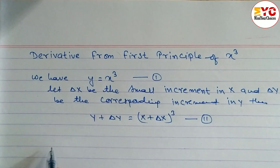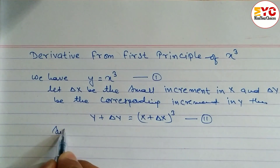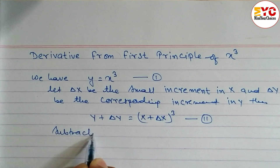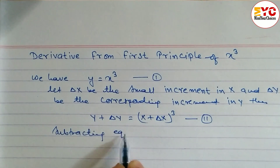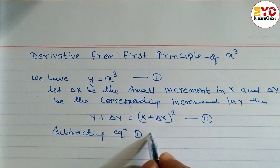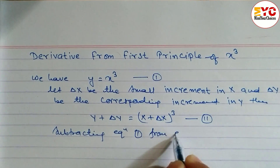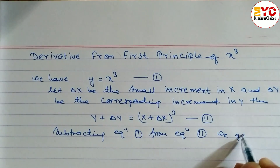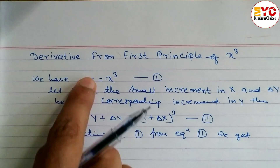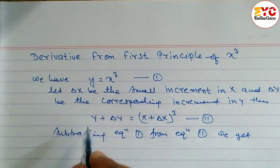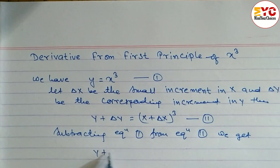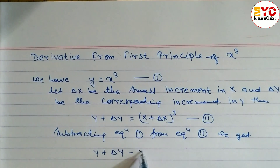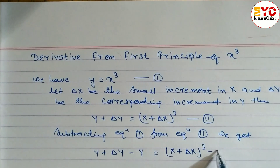We have to subtract equation 1 from equation 2. So subtracting, we get: y plus del y minus y is equal to x plus del x whole cube minus x cube. You can see here y cancels, and the remaining is del y is equal to x plus del x whole cube minus x cube.